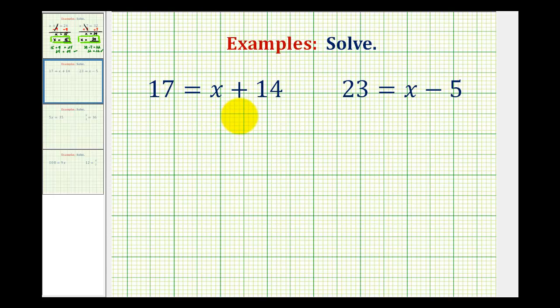These one-step linear equations look a bit different than previous examples because the variable is on the right side instead of the left. But the main thing to remember is the goal is the same. If we can isolate the variable, we can solve the equation.